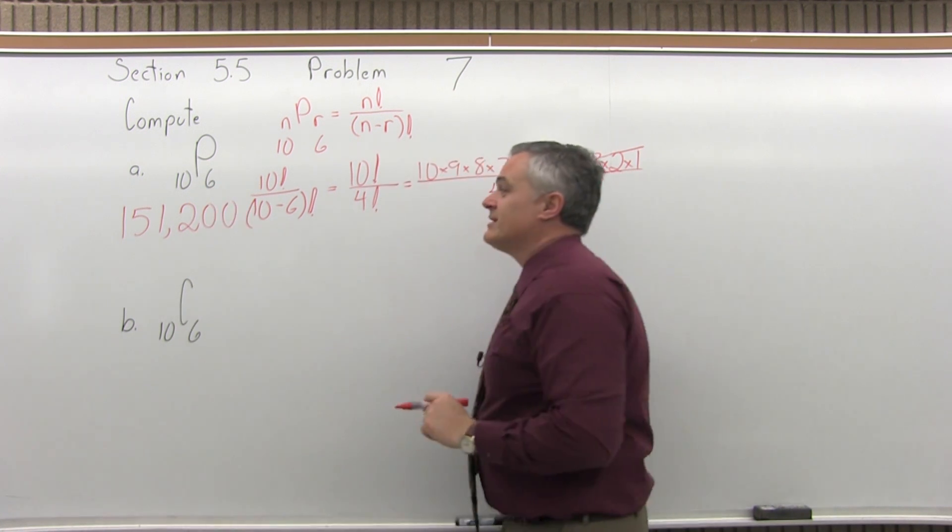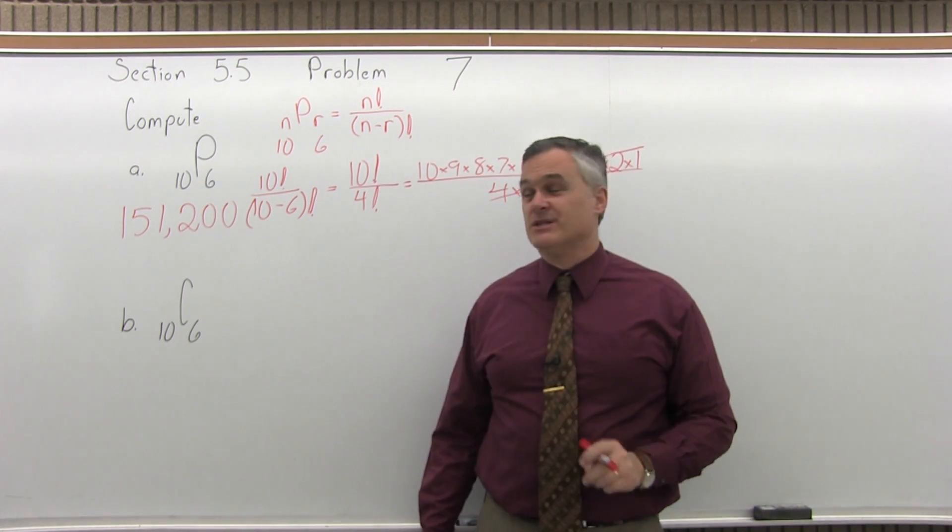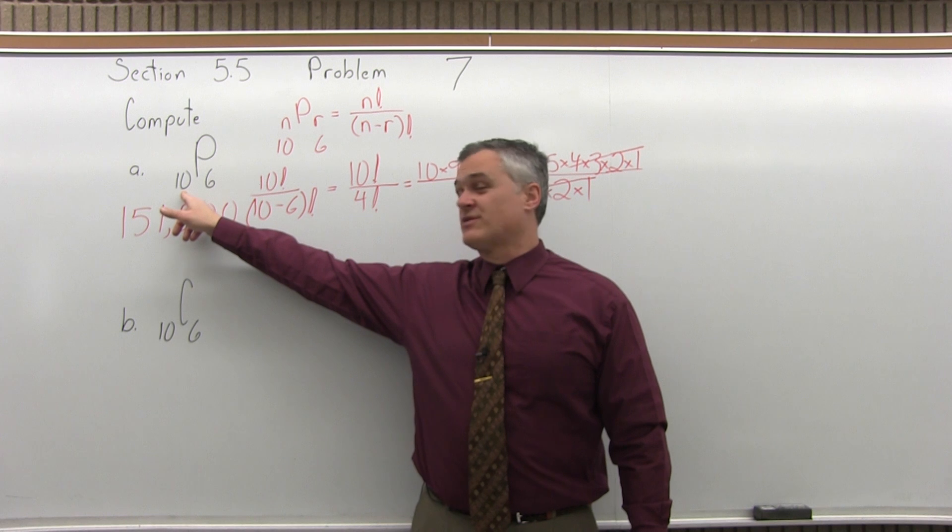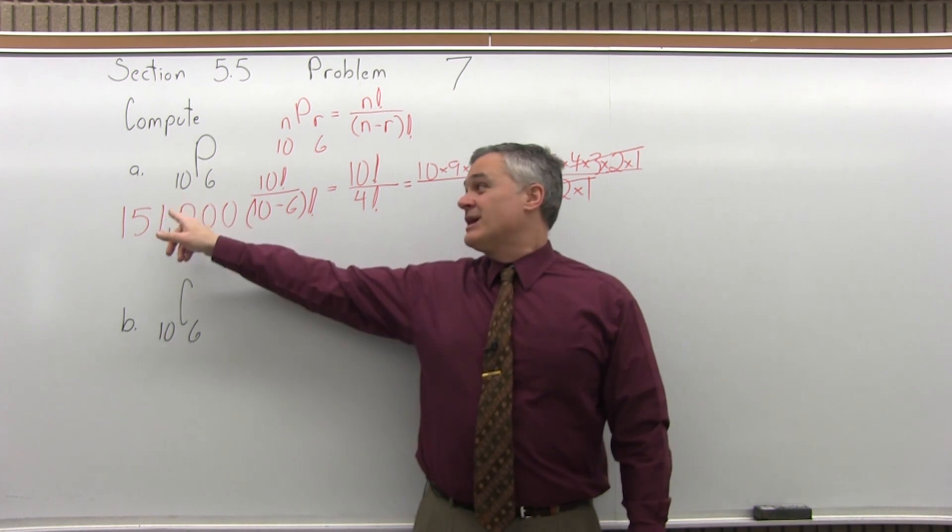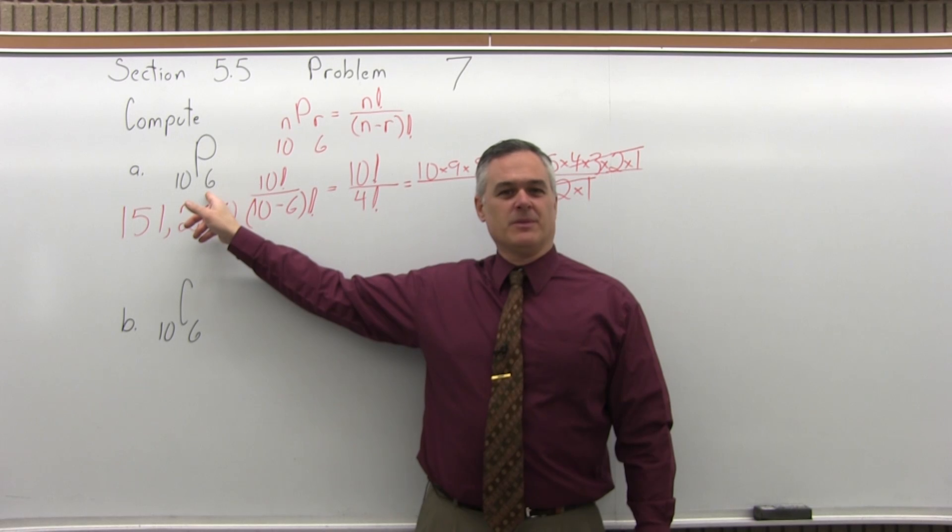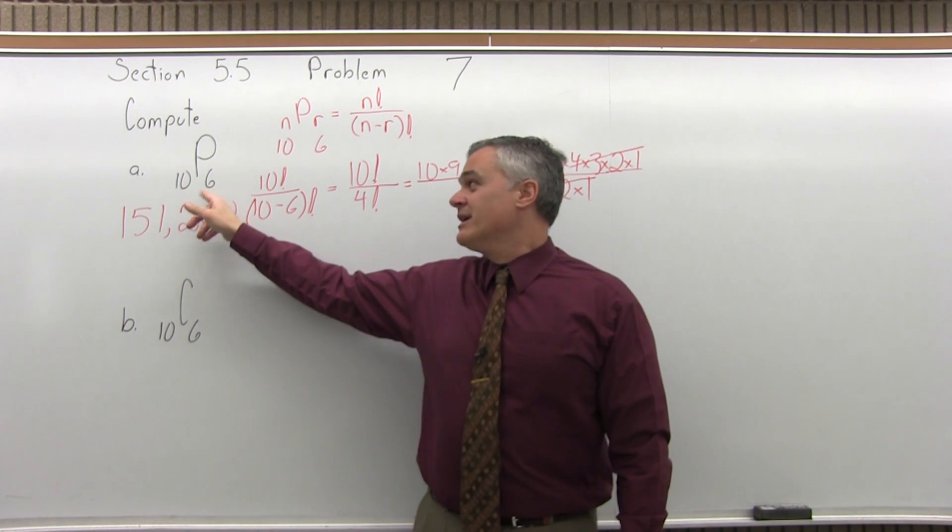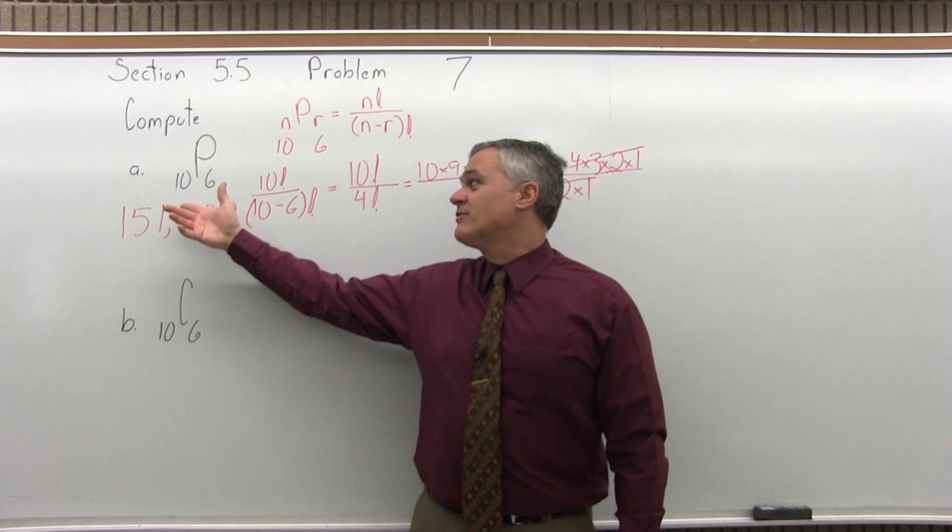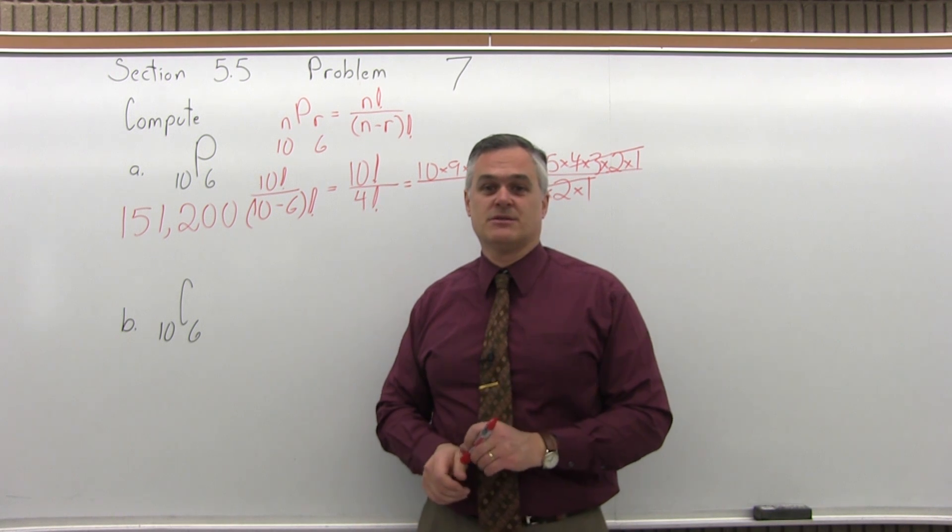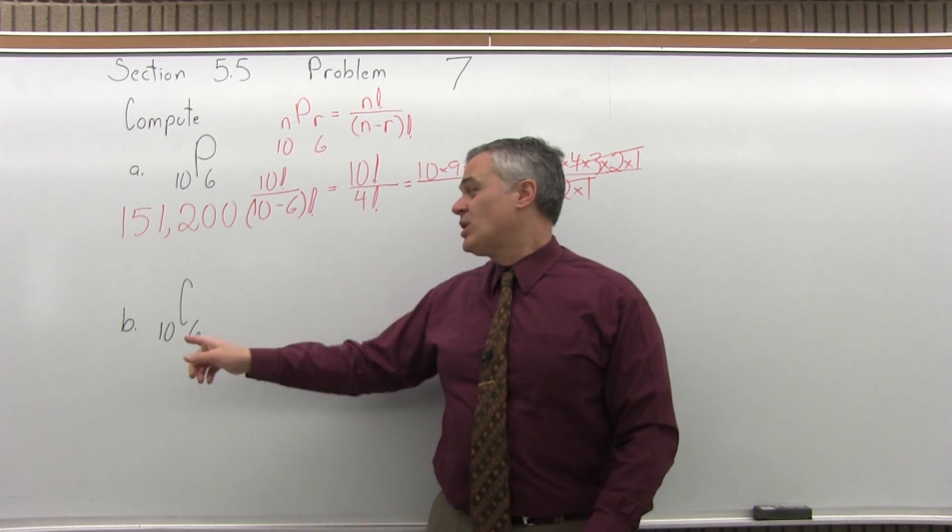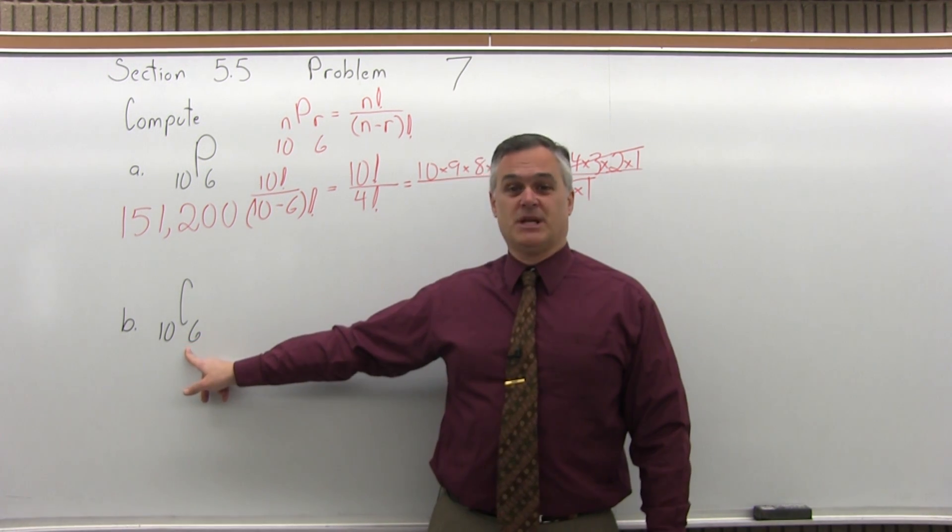It's a surprisingly large answer when you consider what it means. So if you have 10 items to choose from, there's 151,200 different ways you can pick 6 of them. You wouldn't guess it would be that high. Again, if there are no repeats allowed and the different orders count as different answers, the order matters. Watch how much smaller it's going to be if we do it as a combination.